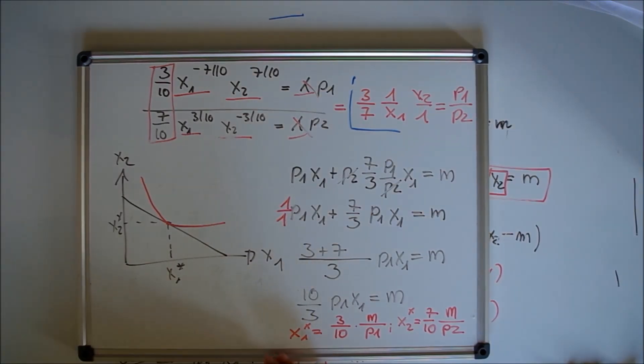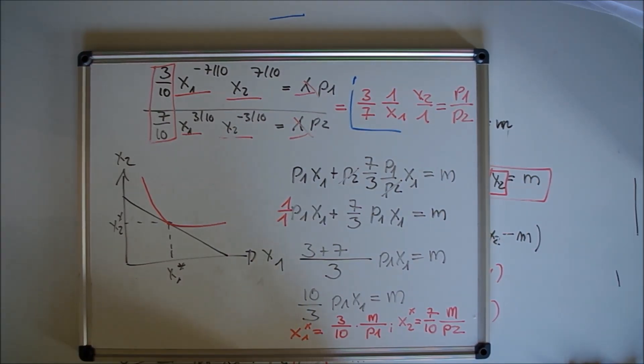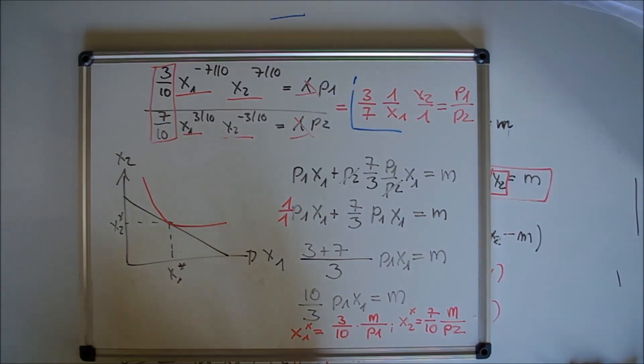Further, if we have constant returns to scale, that means for firms in the long run, they make zero profit. But that's just for further study.